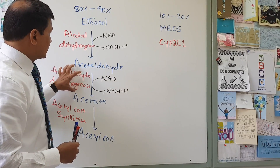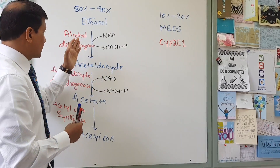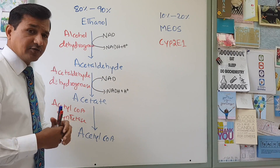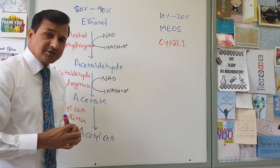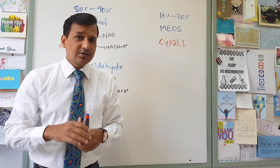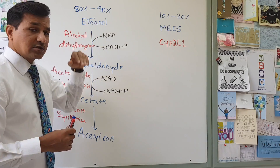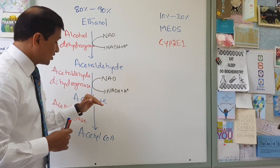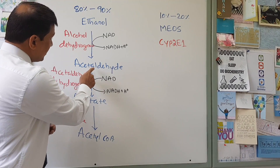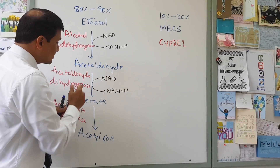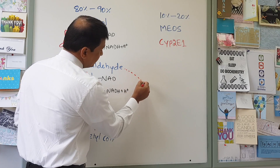Acetaldehyde dehydrogenase can become saturated when a person takes too much alcohol — ethanol converting to acetaldehyde, acetaldehyde further converting to acetate. These enzymes can get saturated because they have their own Vmax. Whenever they reach their Vmax, they won't be able to convert much more alcohol into acetaldehyde or acetaldehyde into acetate. There will be a buildup of acetaldehyde, which can get out of the cytoplasm into blood.